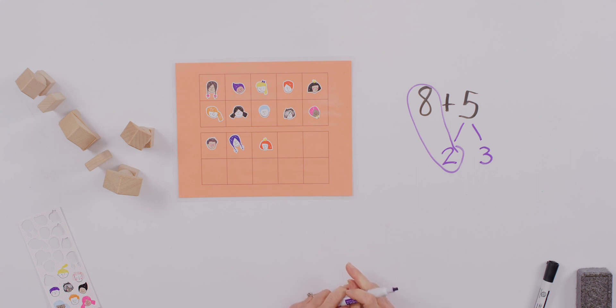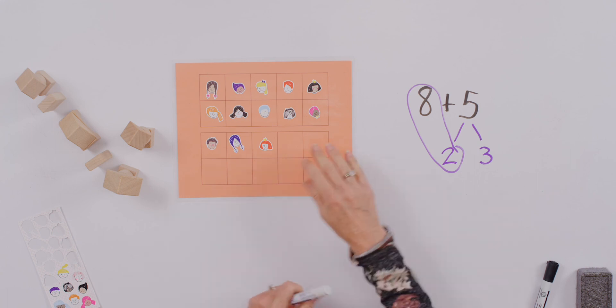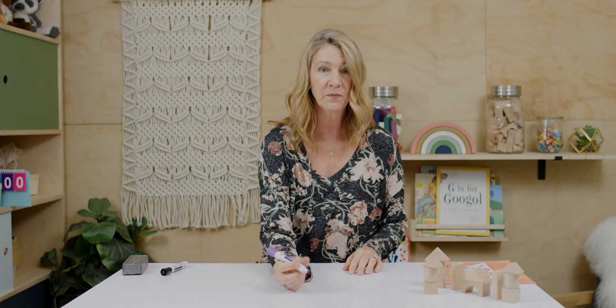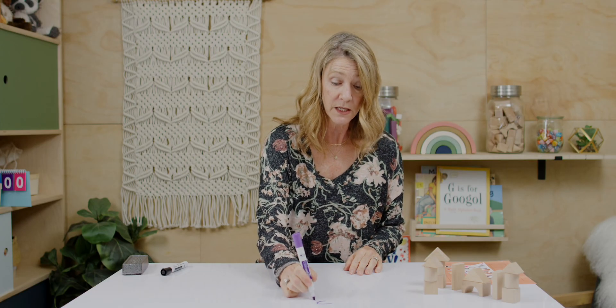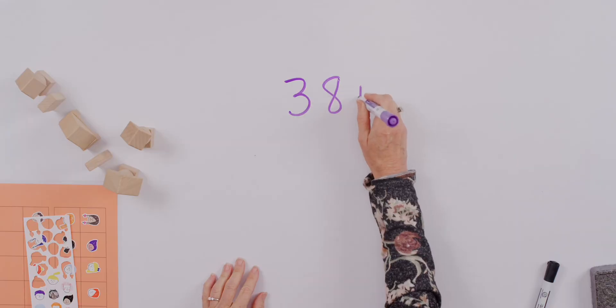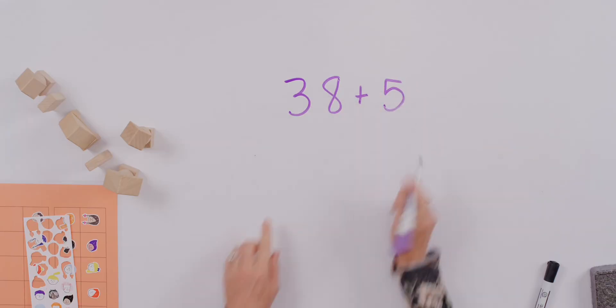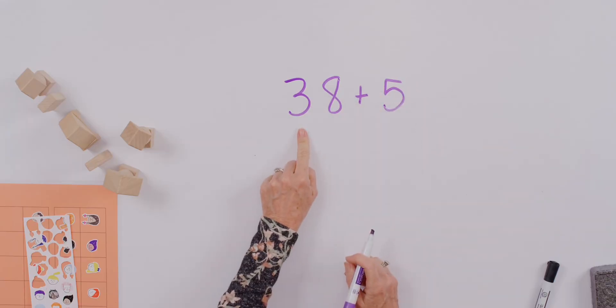Well, as we move up into higher numbers, we still use the same kinds of strategies. So let's see what's next. How about continuing to work with the eight plus five idea, since we've got that down, but we'll put three tens in front of the eight.